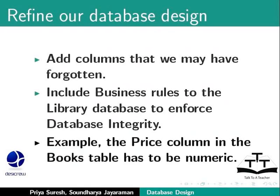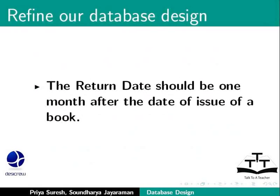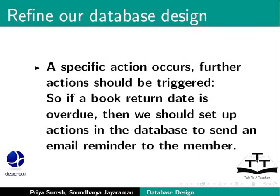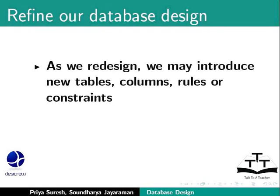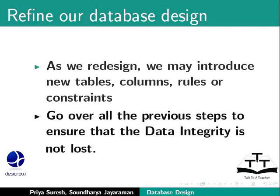For example, the price column in the books table has to be numeric. Another business rule can be that the return date should be one month after the date of issue of a book. Or when a specific action occurs, further actions should be triggered. So if a book return date is overdue, then we should set up actions in the database to send an email reminder to the member. As we redesign, we may introduce new tables, columns, rules or constraints, and we have to go over all the previous steps to ensure that data integrity is not lost.